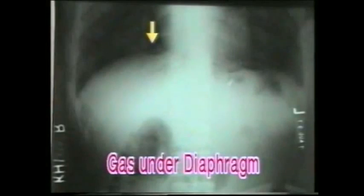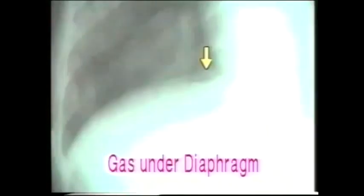In this x-ray, note the very small amount of gas under the right diaphragm. A careful inspection is required to detect small leaks. In the close-up view, observe carefully for the tiny gas shadow between the diaphragm and the liver.